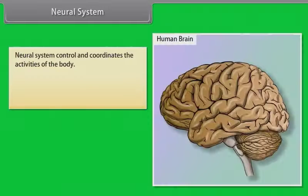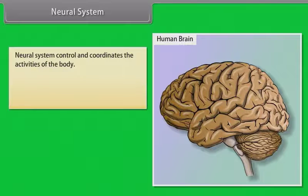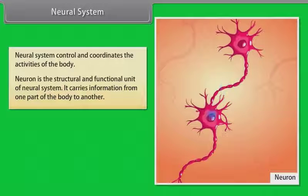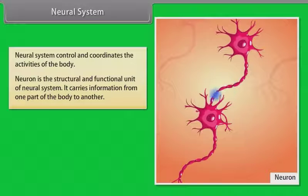Neural system controls and coordinates the activities of the body. Neuron is the structural and functional unit of the neural system. It carries information from one part of the body to another.